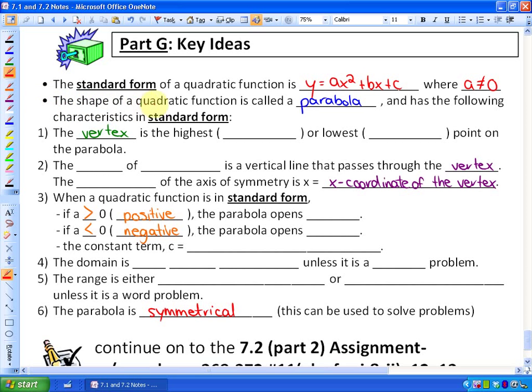Next key idea is that the shape of a quadratic function is called a parabola and has the following characteristics when in standard form.